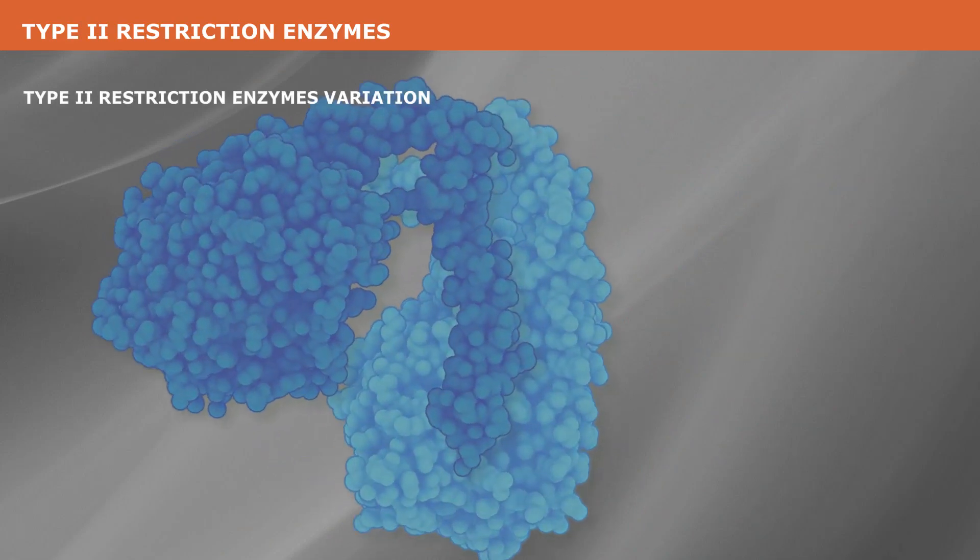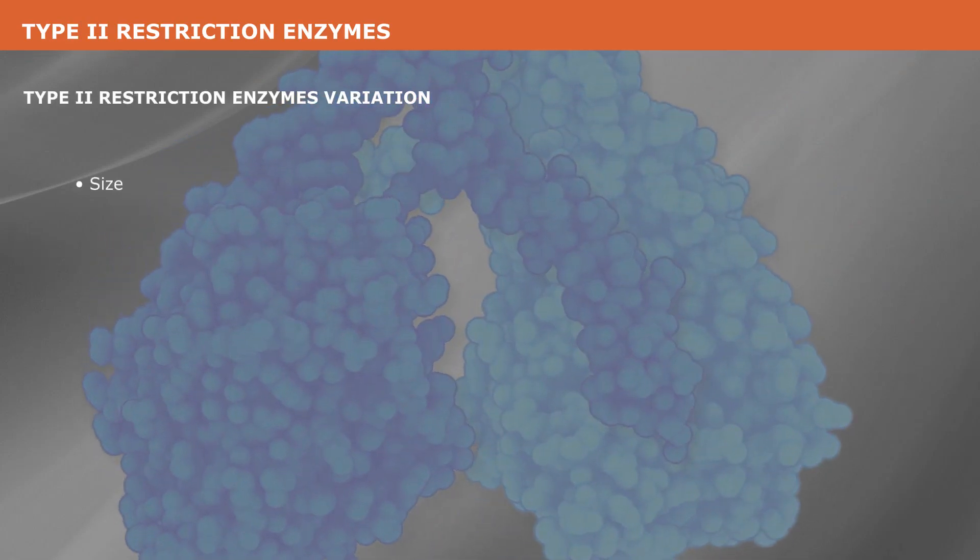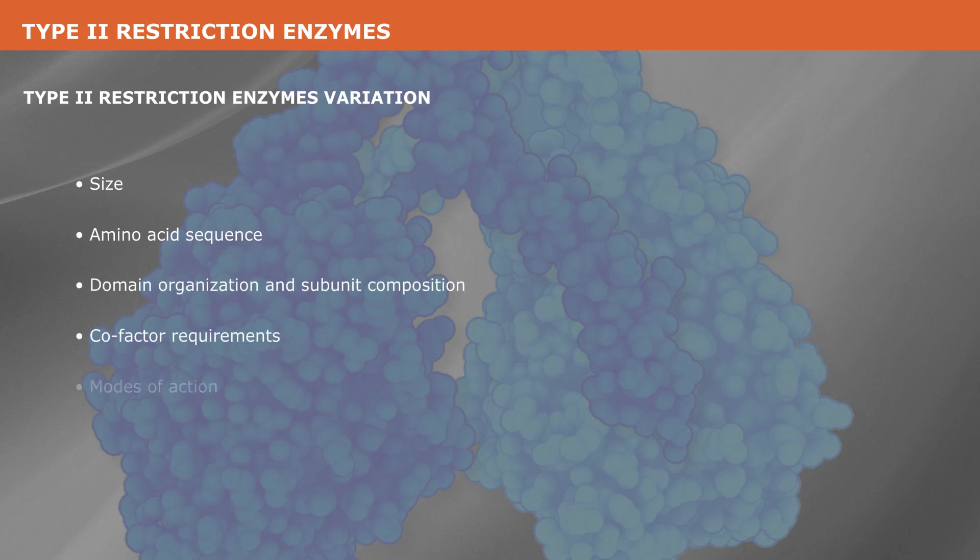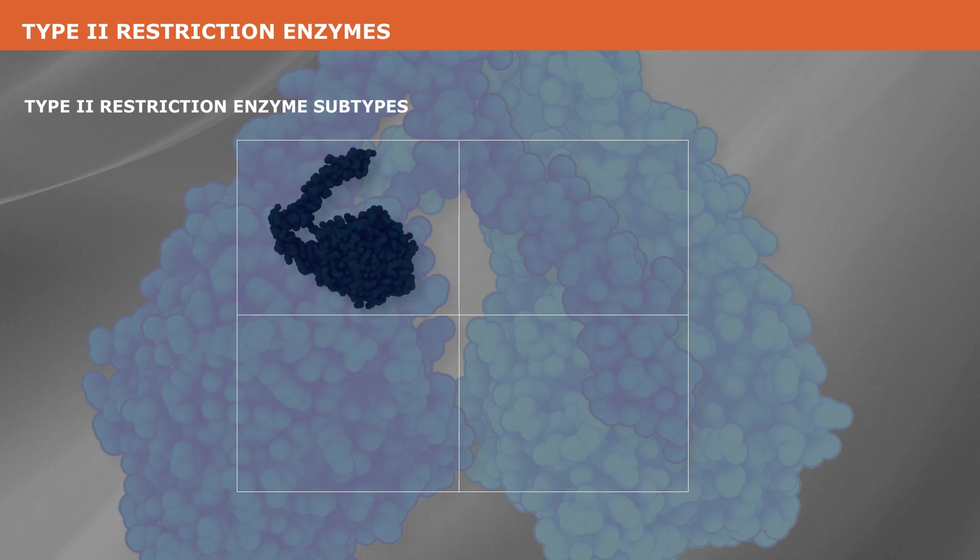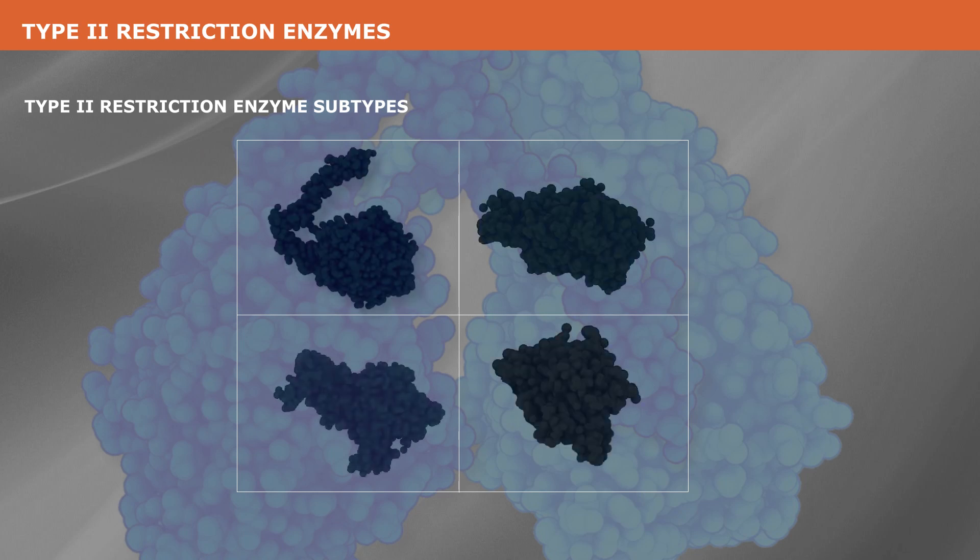Type 2 restriction enzymes vary widely in size, amino acid sequence, domain organization and subunit composition, cofactor requirements, and modes of action. They are loosely grouped into subtypes based on their enzymatic properties. The four most important subtypes are type 2P, 2S, 2C, and 2T.